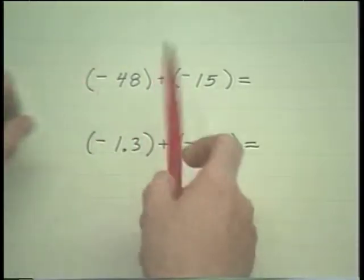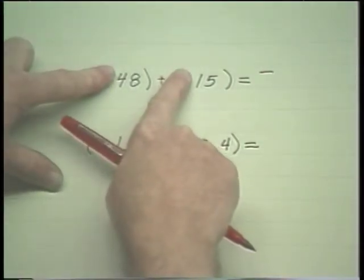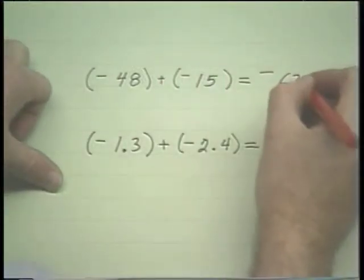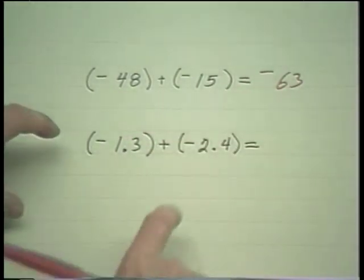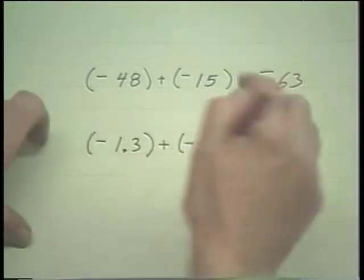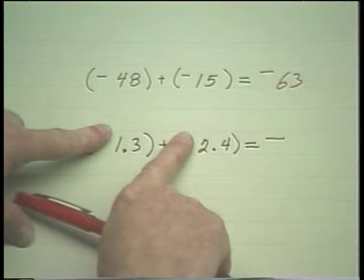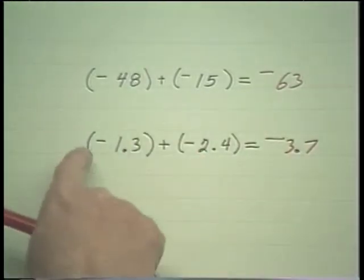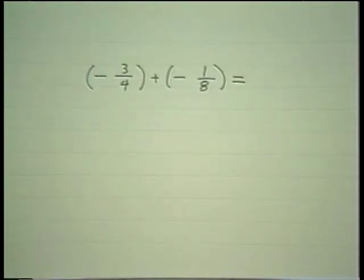When adding two negatives, the answer is negative. Then we just think — add their absolute values, which is another way of saying old-fashioned arithmetic — and that gives me 63. So negative 48 plus negative 15 is negative 63. Again, the rule tells us when adding two negatives the answer is negative, and we simply add the absolute values, which is 3.7. So negative 1.3 plus negative 2.4 is negative 3.7.